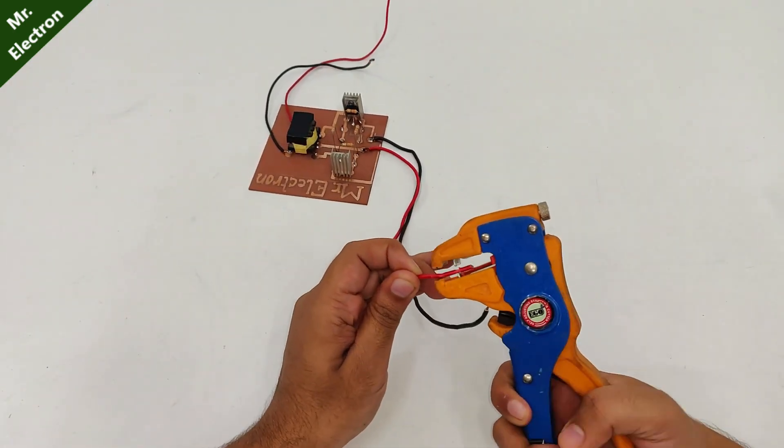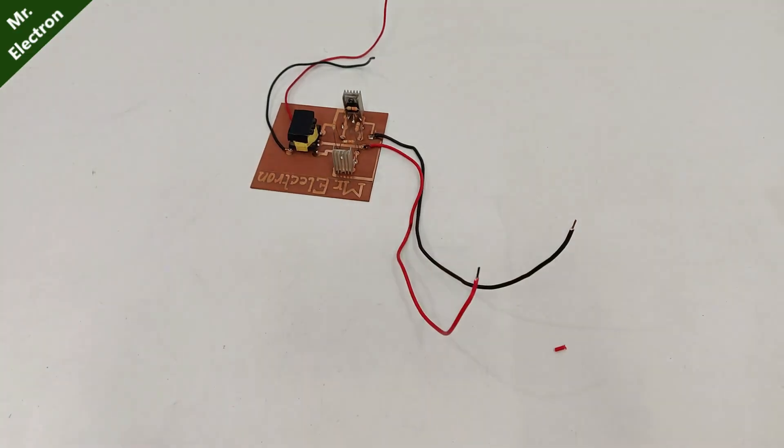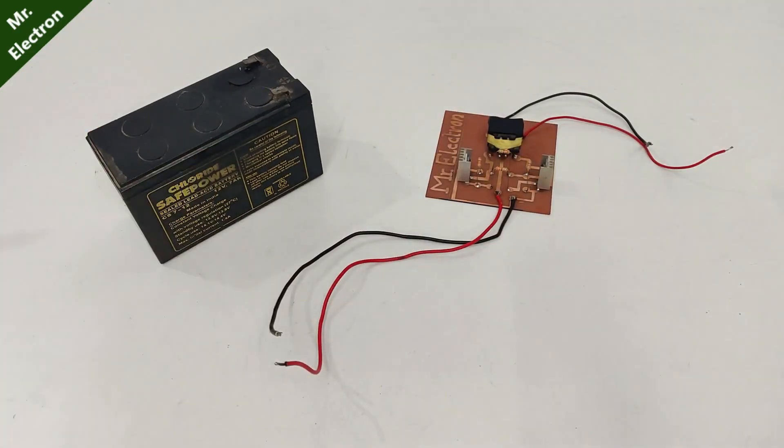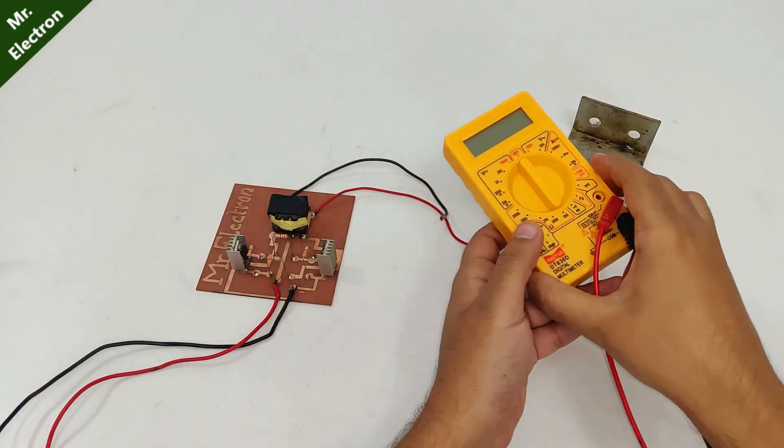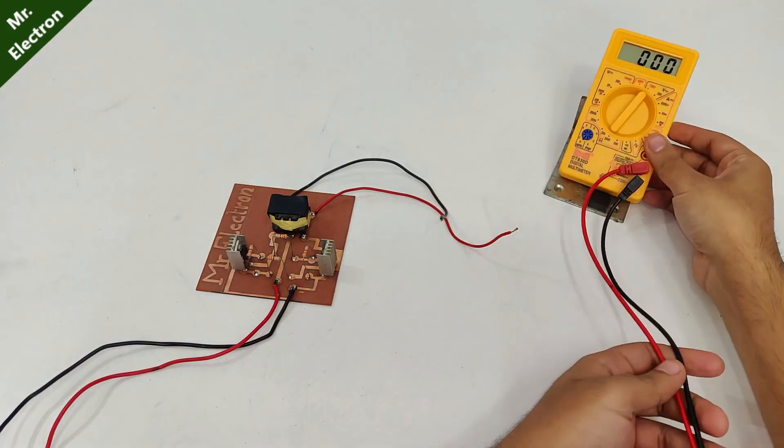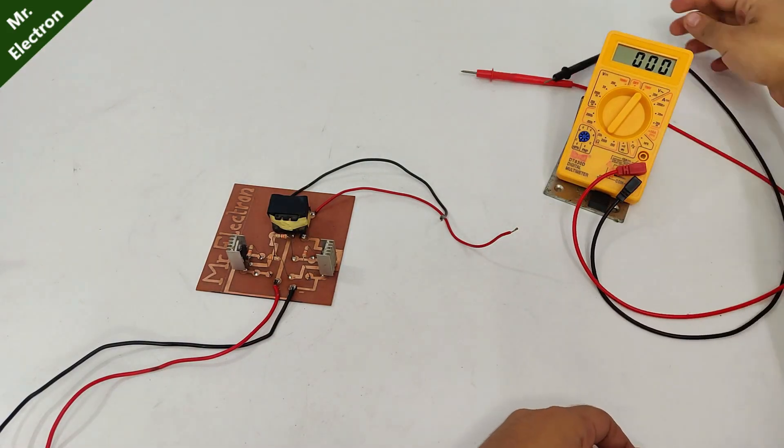So guys, the circuit is finally complete and I'm going to use this 12 volts 7 ampere UPS battery to test it. The first test is going to be the AC output voltage measurement.